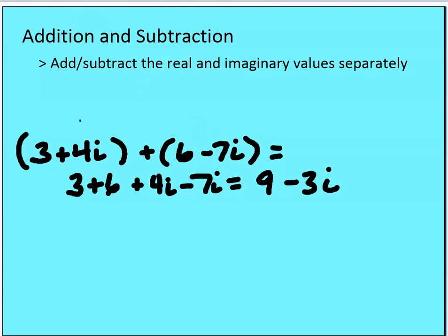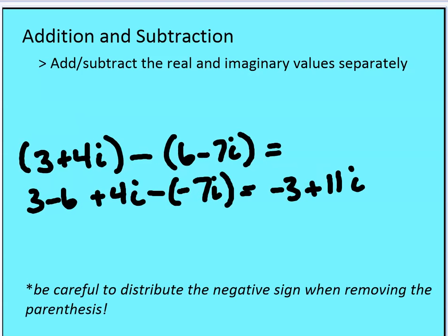Now let's try subtraction. You have to be careful — you must distribute that negative sign. For (3 + 4i) minus (6 − 7i), the signs in the second complex number change: we get 3 minus 6 plus 4i minus negative 7i, which is plus 7i. That gives us negative three plus 11i. When eliminating parentheses with a negative sign, you must distribute that negative sign across all terms in the complex number.